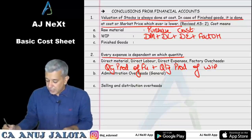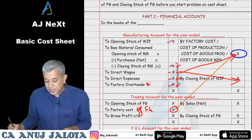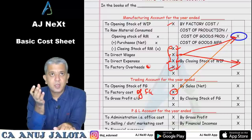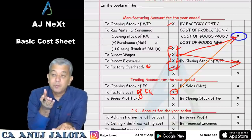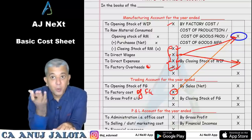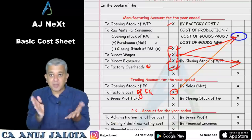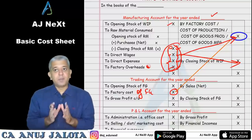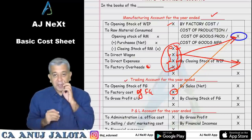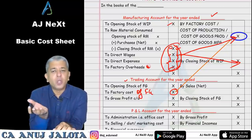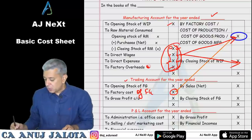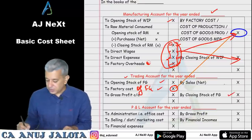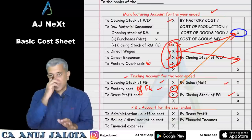In the trading account: opening stock of finished goods, factory cost of finished goods from above, closing stock of finished goods, and sales. The balancing figure is gross profit. For example, if 50 units of finished goods were produced, opening stock was 10 units, closing stock is 8 units — then cost of goods sold covers 52 units. That's what COGS represents.